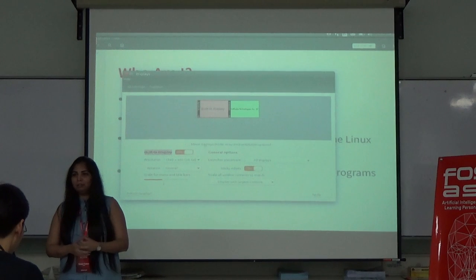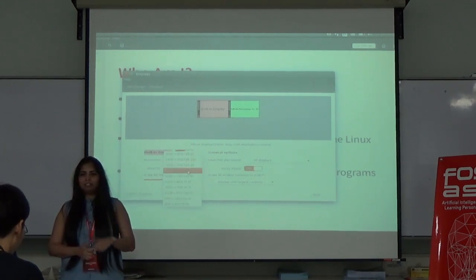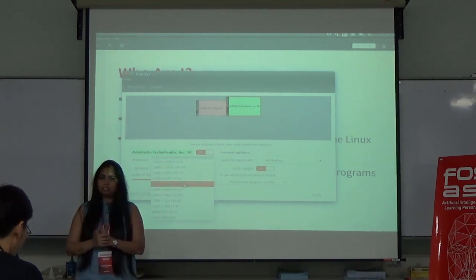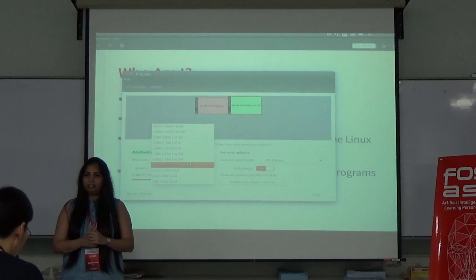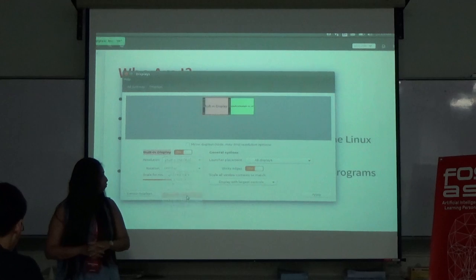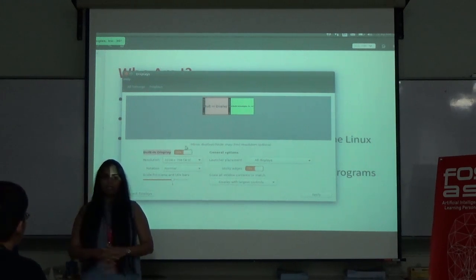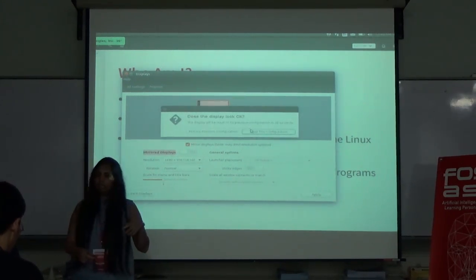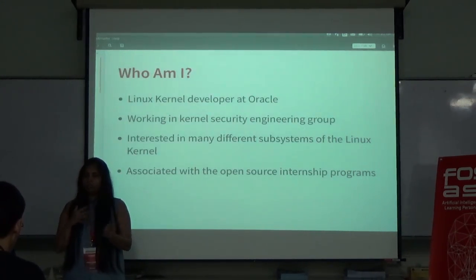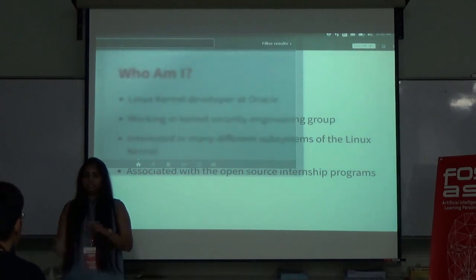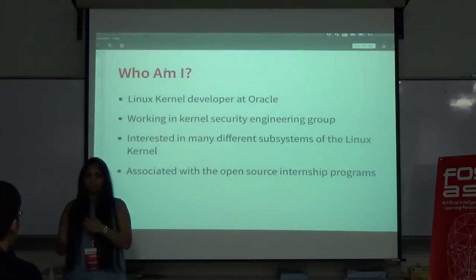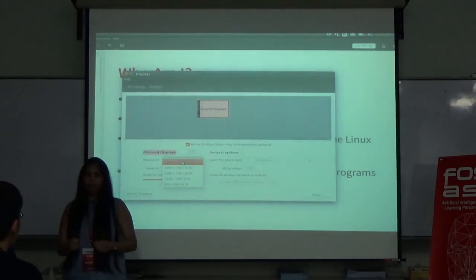I work as a Linux kernel developer at Oracle in the kernel security engineering group. I work on the kernel hardening project and some static and dynamic analysis tools to reduce bug classes in the Linux kernel. Today I'll be speaking about Coccinelle, which is basically a program matching and transformation tool used for the past 10 years in the Linux kernel for finding and even fixing bugs.